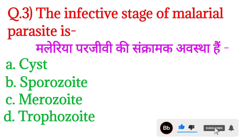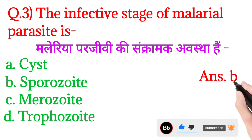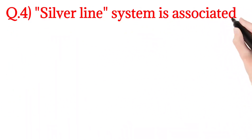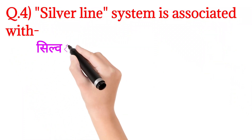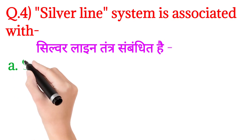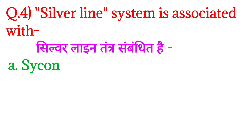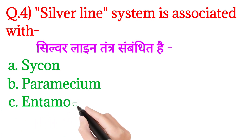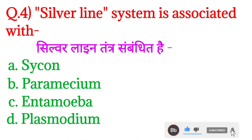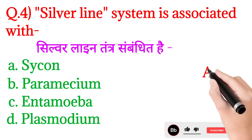Option B: sporozoite. Question number 4 — silver line system is associated with — silver line tantra sambandhit hai. Iske liye option A: Sicon, option B: Paramecium, option C: Entamoeba, and option D: Plasmodium. Chalo iska answer batao aap log kya hoga.